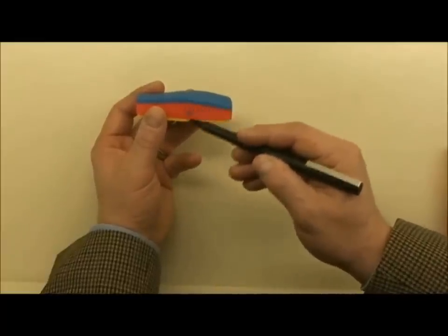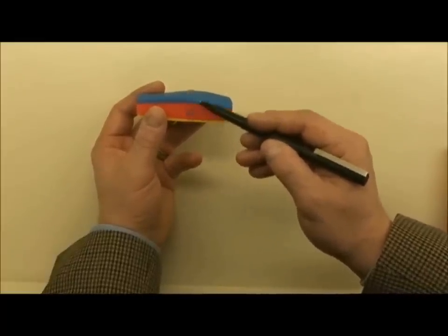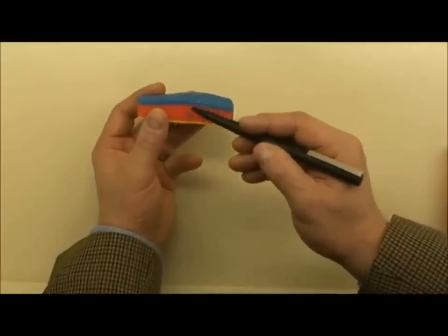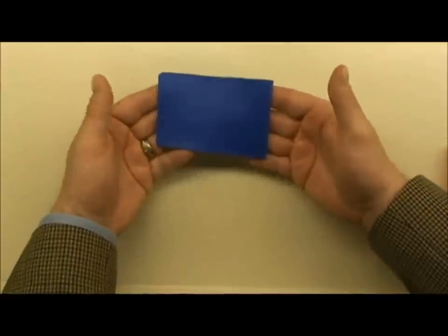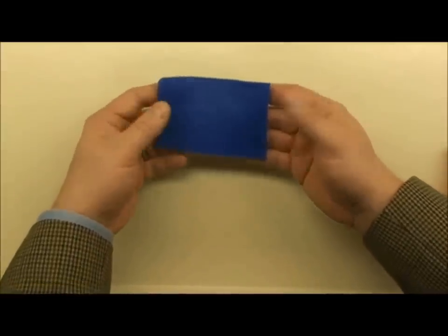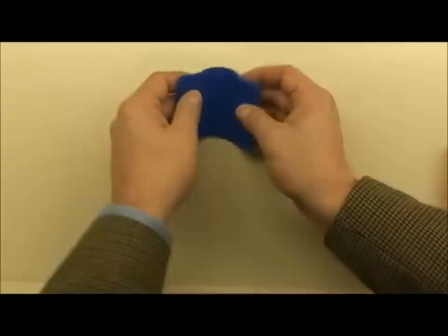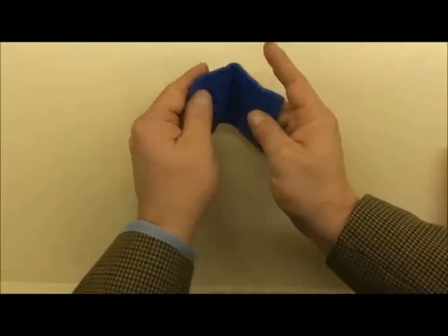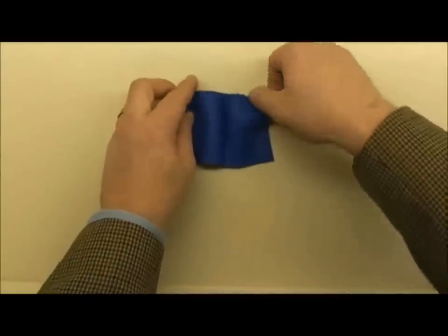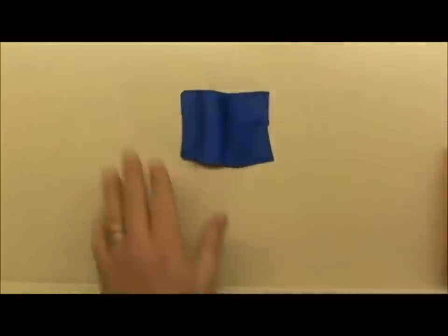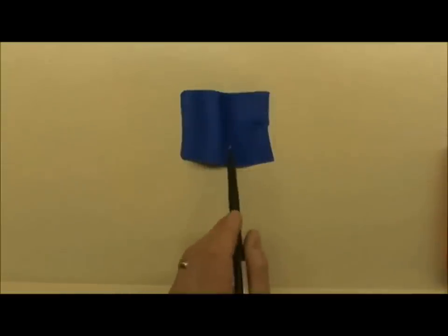What's going to happen, one of the first and major events that the notochord signals is an involution of the ectoderm to form the neural tube. And the neural tube is going to form all of the central nervous system. Now we're going to take this as an isolated piece of ectoderm to demonstrate what happens. The first thing that happens is just above the notochord, the ectoderm thickens and forms a little fold on the midline, and two protuberances right here.